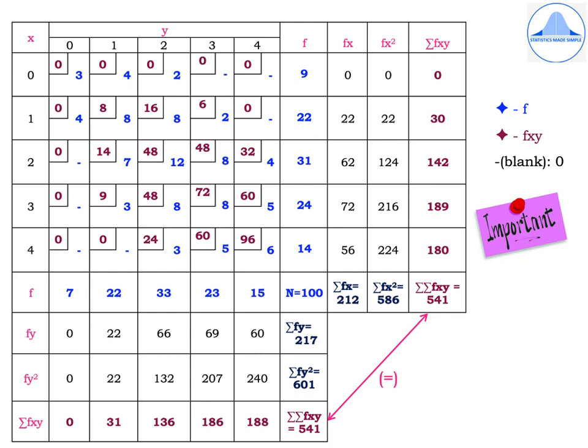Similarly, find the column-wise frequency sums for y. When y equals 0, frequencies 3 and 4 sum to 7. When y equals 1, frequencies 4, 8, 7, 3 sum to 22. When y equals 2 we get 33, when y equals 3 we get 23, and when y equals 4 we get 15. Adding 7, 22, 33, 23, 15 gives capital N equals 100.